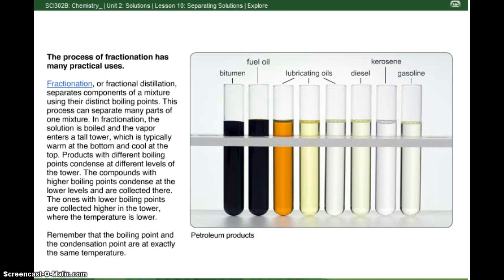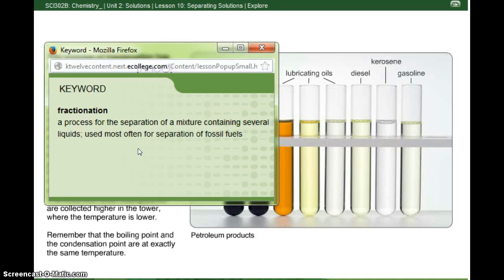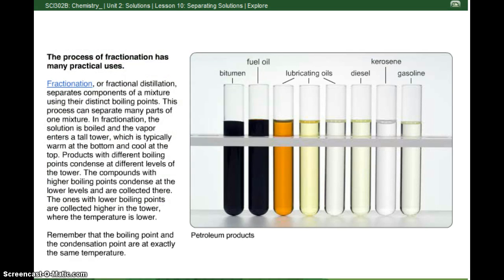All right, the next way to separate a mixture is fractionation. Fractionation is a process for the separation of a mixture containing several liquids used most often for separation of fossil fuels. The process of fractionation has many practical uses. Fractionation, or fractional distillation, separates components of a mixture using their distinct boiling points. This process can separate many parts of one mixture. In fractionation, the solution is boiled and the vapor enters a tall tower, which is typically warm at the bottom and cool at the top. Products with different boiling points condense at different levels of the tower. The components with higher boiling points condense at the lower levels and are collected there. The ones with lower boiling points are collected higher in the tower where the temperature is lower. Remember that the boiling point and the condensation point are at exactly the same temperature. So water boils at 100 degrees Celsius and it condenses at 100 degrees Celsius.